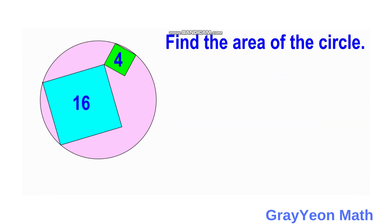Since we are solving this with the intersecting chords theorem, we need to draw chords inside this circle related to the 2 squares. One chord could be the length of the side of the blue square. Since the blue square has an area of 16 square units, one side is 4 units. We can also draw a segment from a vertex of the green square to a vertex of the blue square, forming a chord.